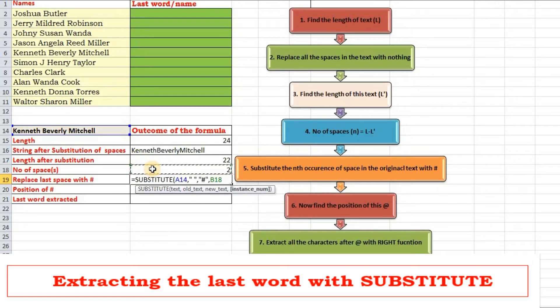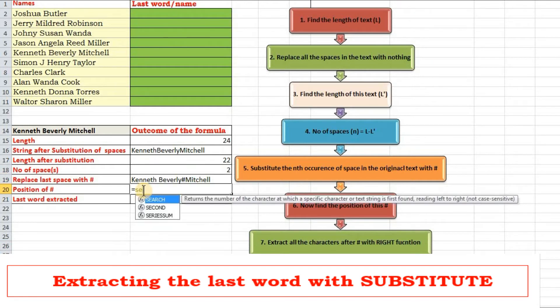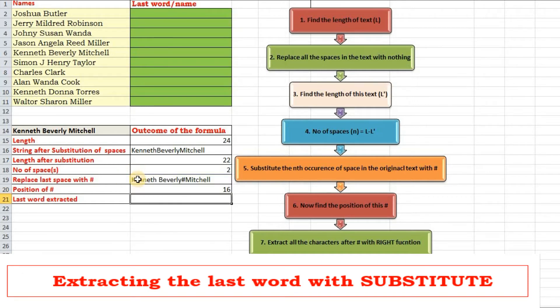After having done the substitution it is a cakewalk now. Now we have to find the position of this hash. Find hash within this text. So I got to find the position of hash meaning thereby I got to find the position of the third and the last space and we are almost done.